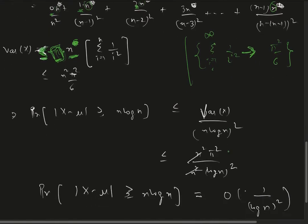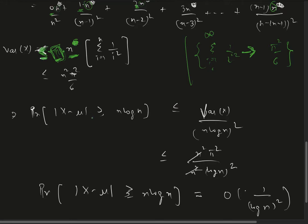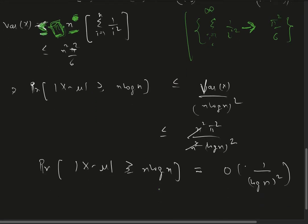Using this result and using Chebyshev's inequality, we get that the probability that X, the deviation on either side of mean, the probability that the deviation is greater than some n log n is bounded by the order of 1/(log n)^2.